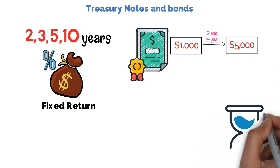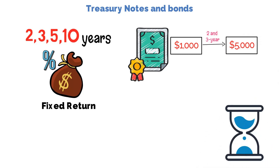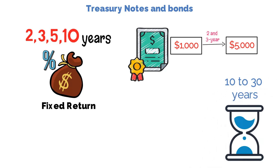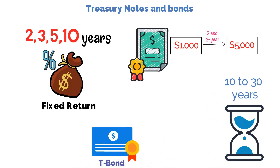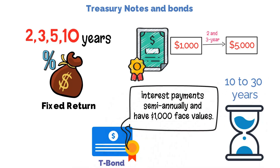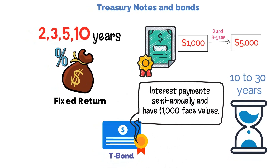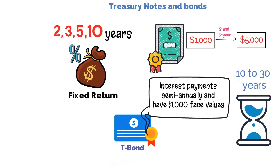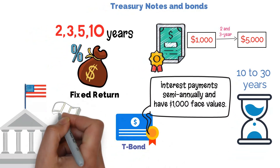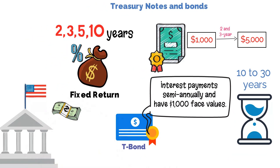T-bonds, on the other hand, are long-term and have a maturity between 10 to 30 years. T-bonds give interest payments semi-annually and have $1,000 face values. These bonds are typically used to regulate the nation's money supply and execute U.S. monetary policy.